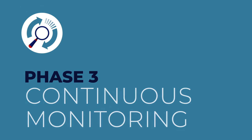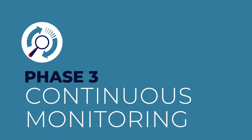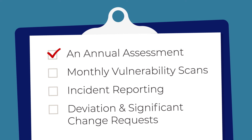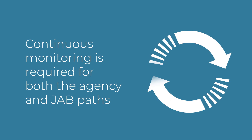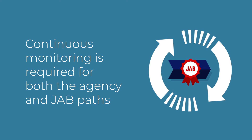The third phase is continuous monitoring. All CSPs must complete an annual assessment, monthly vulnerability scans, incident reporting, and deviation and significant change requests. Continuous monitoring is required for both the agency and JAB paths.